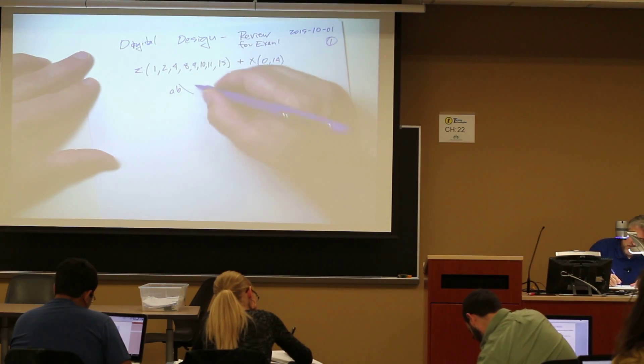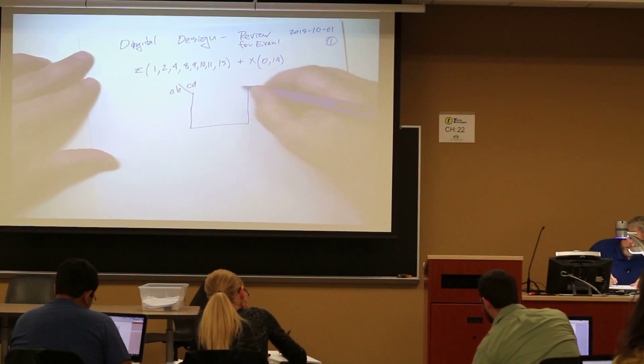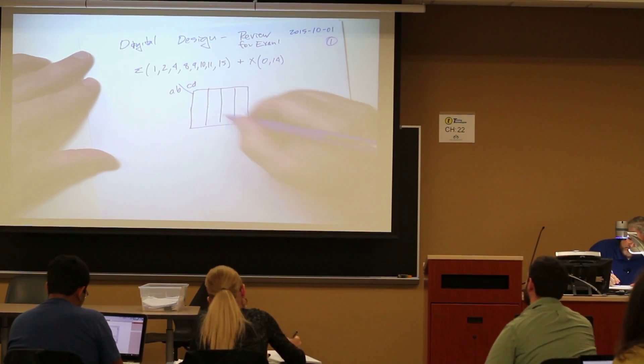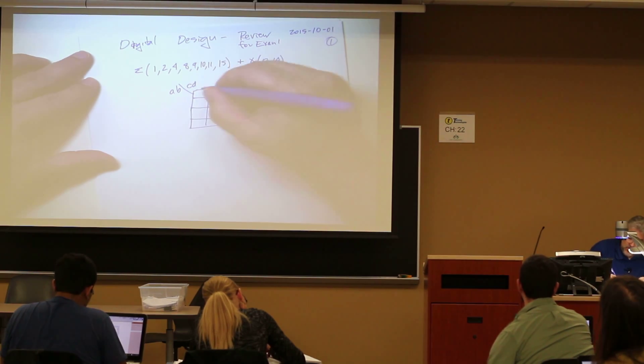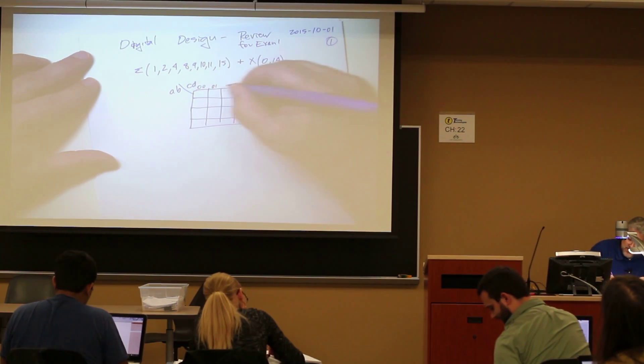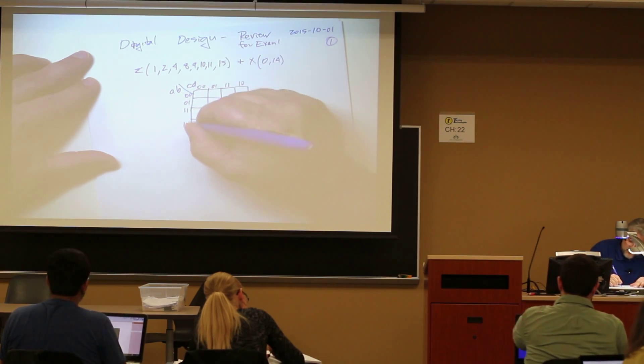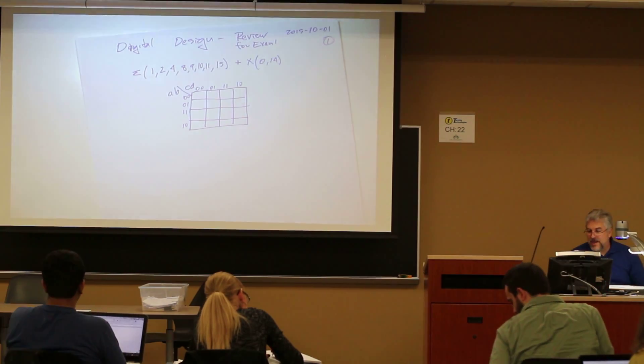Alright, so there we go. I have A, B. I have C, D. Yeah, some people already know how they're going to do really well on the exam. Good for them. That is a properly generated K map.